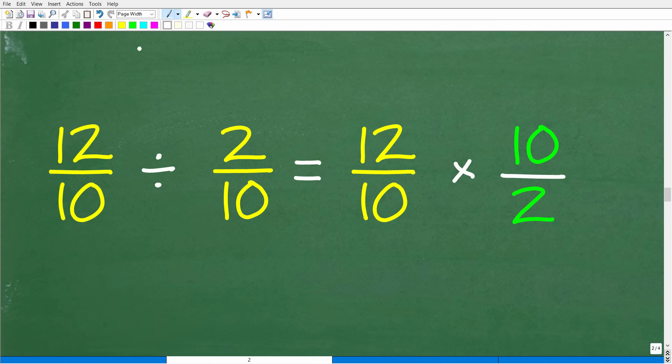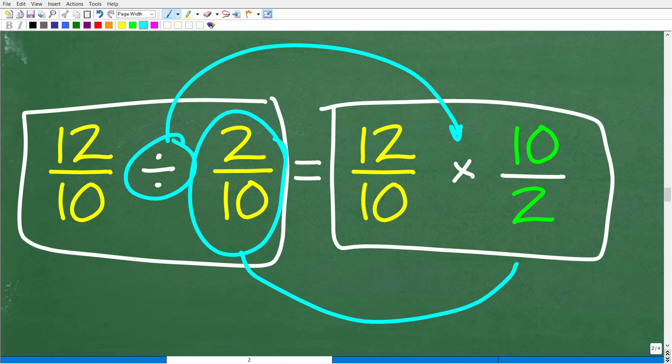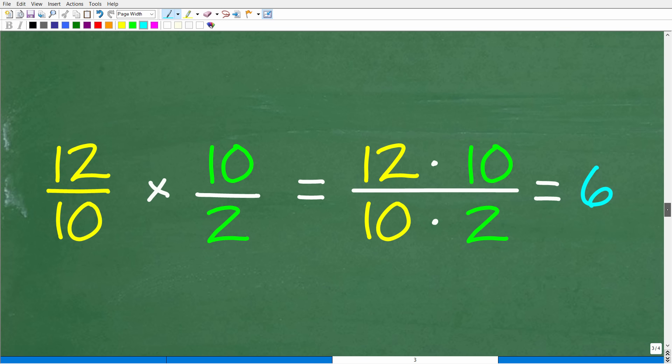Now we don't really divide fractions per se. What we're going to do is change a division problem of fractions into multiplication. How do we change a division problem into an equivalent multiplication problem when it comes to fractions? Pretty easy. We're going to go from division to multiplication. We're going to take the fraction to the right of the division symbol, in this case 2 tenths, and flip it upside down. That's called the reciprocal. So 2 over 10 becomes 10 over 2, and this becomes multiplication.